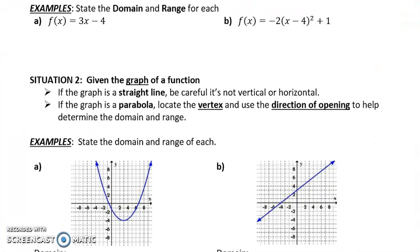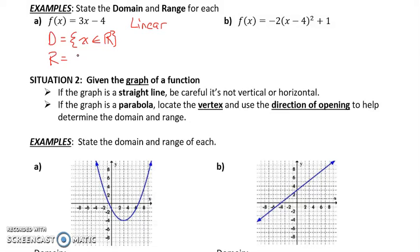Let's do a couple of examples. Try pausing the video and trying these yourself first. The first example says: state the domain and range for each. F of X equals 3X minus 4. This is a linear function, and we know that if a function is linear, then the domain is equal to X as a set of all real numbers, and the range is equal to F of X as a set of all real numbers. There are no restrictions for a linear relation.